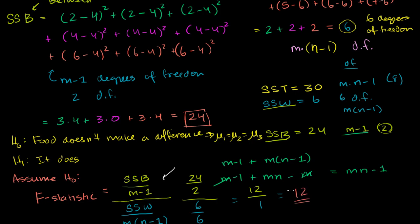Our F-statistic of 12 is a pretty high number. For any hypothesis test, we need a significance level. Let's say our significance level is 10%, or α = 0.10. This means that if, assuming the null hypothesis, there's less than a 10% chance of getting this F-statistic, we will reject the null hypothesis. We need to find the critical F value; if our calculated F exceeds it, we reject the null.